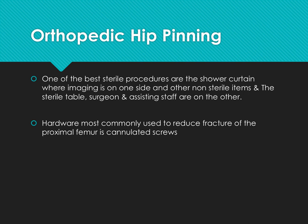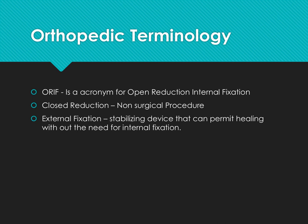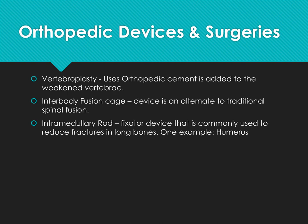Orthopedic hip pinning. One of the best setups is the shower curtain arrangement, where imaging and other non-sterile items are on one side, and the sterile table, surgeon, and assisting staff are on the sterile side. Hardware most commonly used to reduce a fracture of the proximal femur is cannulated screws. ORIF is an acronym for open reduction internal fixation. Closed reduction is a non-surgical procedure. External fixation is a stabilizing device that can permit healing without internal fixation. Vertebroplasty uses orthopedic cement added to weakened vertebrae. An interbody fusion cage is an alternate device to traditional spinal fusion. An intramedullary rod is a fixator device commonly used to reduce fractures in long bones, such as the humerus.